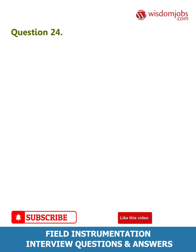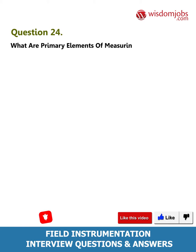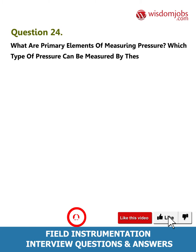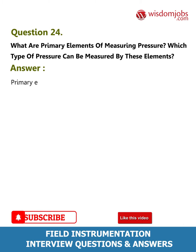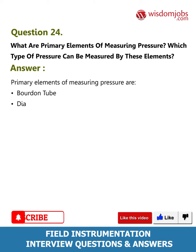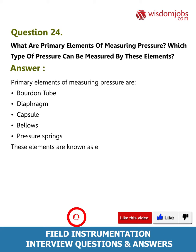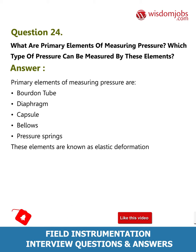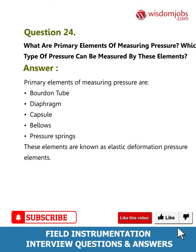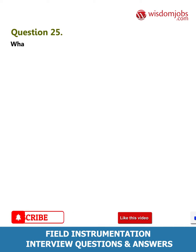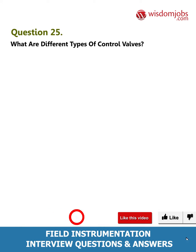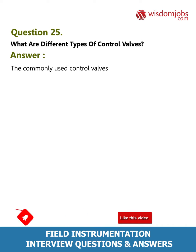Question 24: What are the primary elements of measuring pressure, and which types of pressure can be measured by these elements? Answer: Primary elements of measuring pressure are the Bourdon tube, diaphragm, capsule, bellows, and pressure springs. These elements are known as elastic deformation pressure elements.